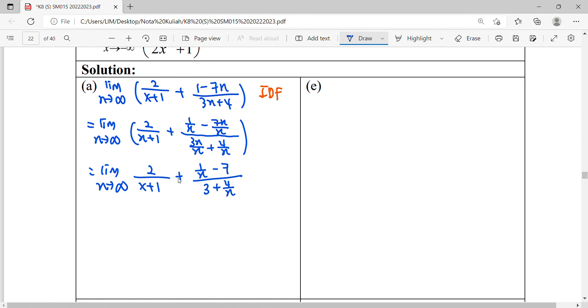After we simplify our function, we can evaluate our limit at infinity here, when x approaches infinity. When you substitute, it will be 2 over infinity plus 1 over infinity minus 7, then 3 plus 4 over infinity.